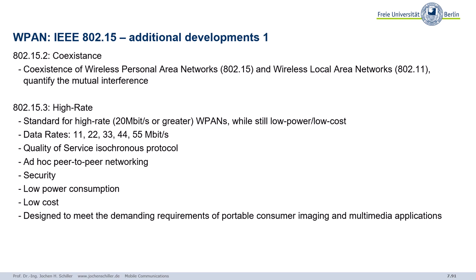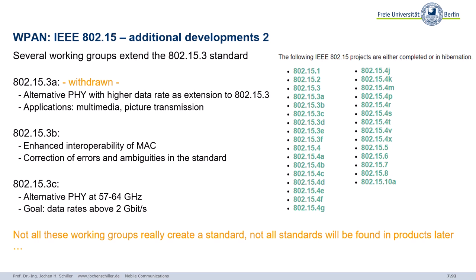In this last section I will give you insight into some additional developments. IEEE was quite active there. 802.15 has some more standards covering coexistence. Dot-three working group covers higher data rates, but there are conflicts between working groups. Some groups were withdrawn, not all were successful, and you will not find products for all these groups. Some are completed, some in hibernation, some withdrawn.